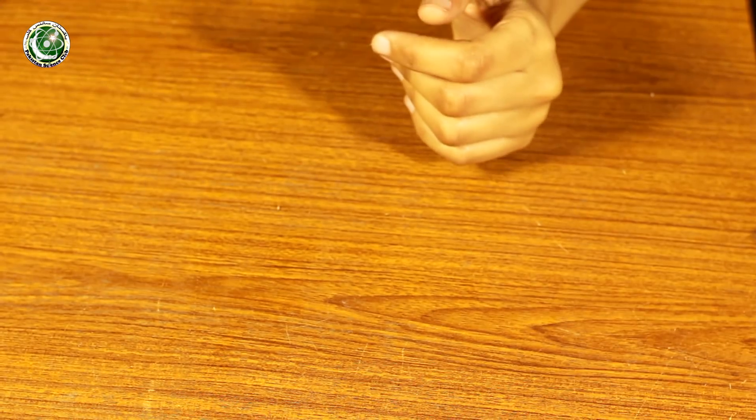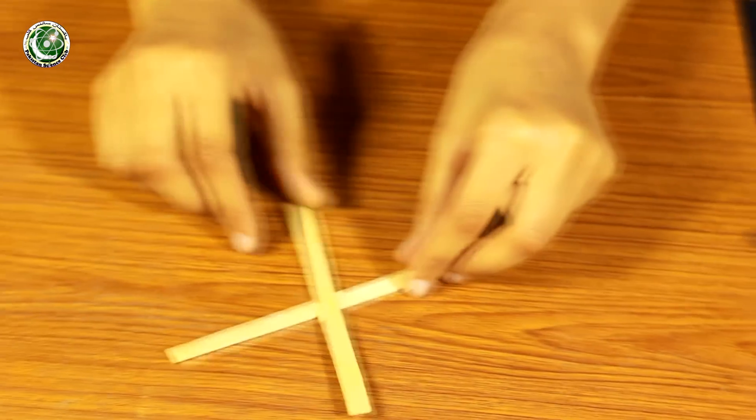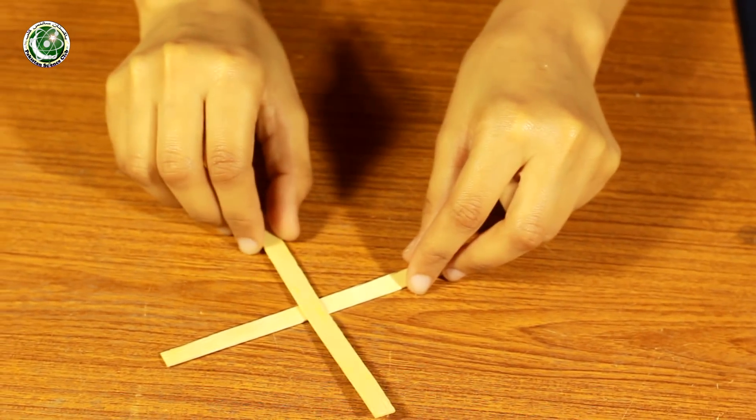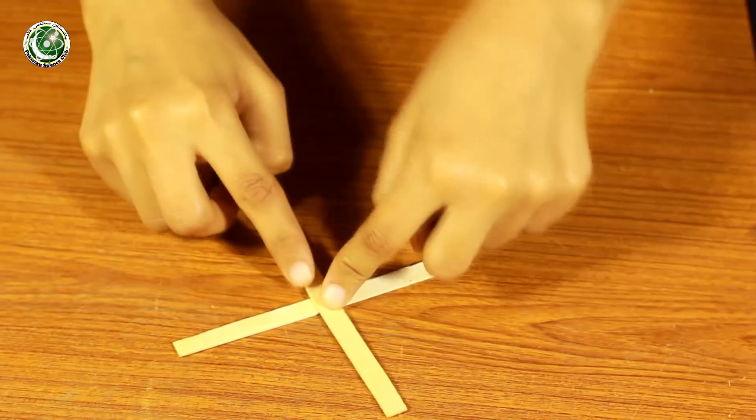First of all, we will prepare blades. We need two popsicle sticks. We need to put the popsicle sticks in a cross. We need to keep this project in the center.